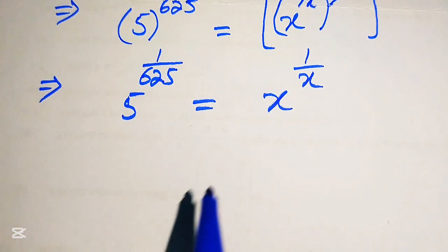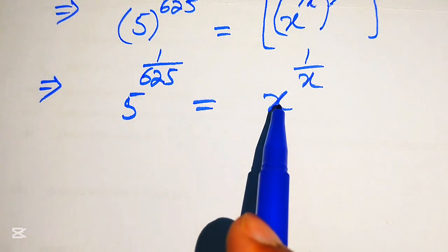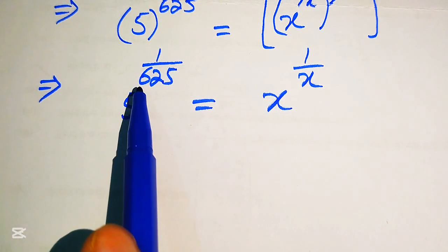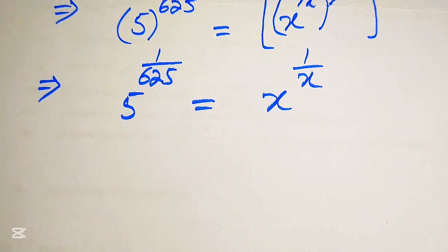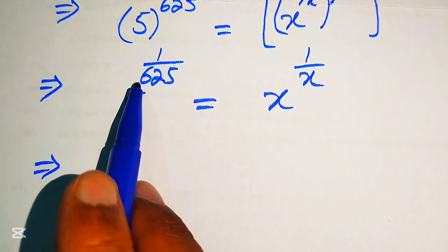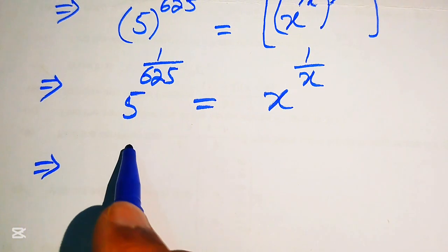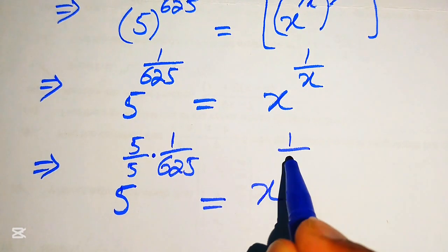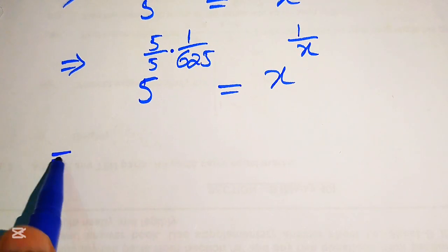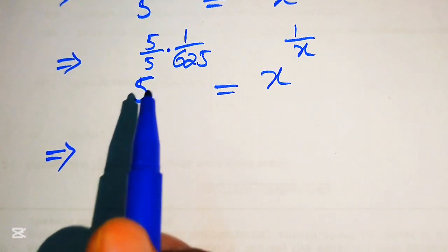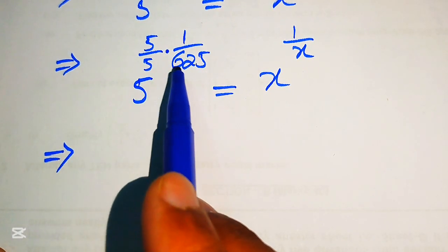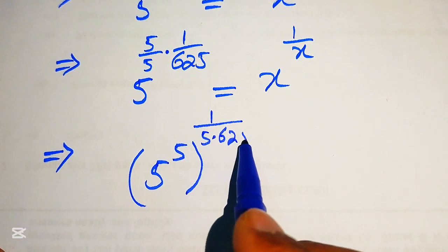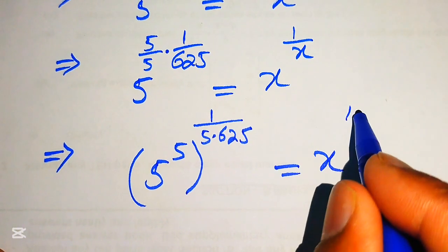Now we need the base and exponent on the left side to match the reciprocal form of the right side — that is, the exponent should be the reciprocal of the base. To achieve this, we multiply and divide the exponent of the left side by 5, writing it as 5 to the power of 5 divided by 5, times 1/625, equals x to the power of 1/x. Moving 5 inside the term and multiplying it with 625 gives 5 to the power of 5 times 1 over 5 times 625, equals x to the power of 1/x.